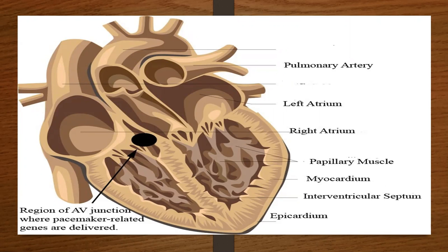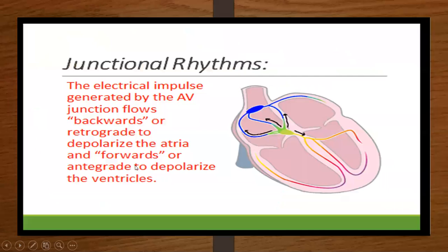AV Junction rhythms are rhythms that occur around the AV node between the right atrium and the right ventricle. Junctional rhythms are the electrical impulse generated by the AV Junction when it flows backwards or retrograde to depolarize the atria, and it can also flow forward and depolarize the ventricle.